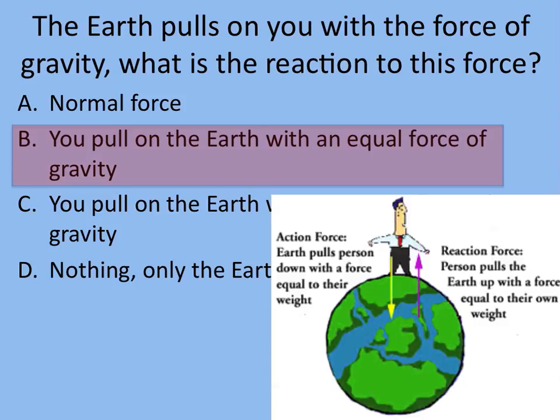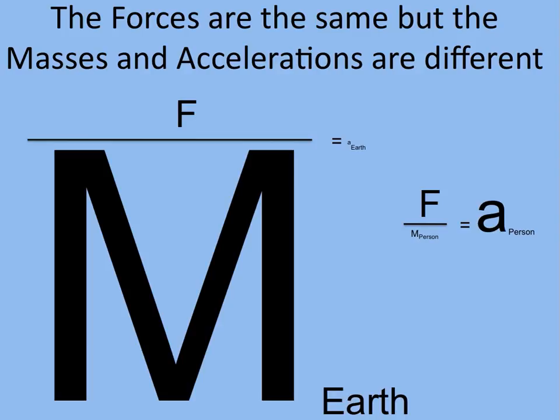It's because the masses are different. The accelerations are different. And so the forces are the same. Notice the force is the same size. Mass of the Earth is so much bigger than the person. You get a tiny acceleration, effectively zero when you're talking about the Earth. And then for the person, a noticeable acceleration. So if your instinct is there's something different, you're right, but it's not the forces, it's the accelerations because the masses are different.